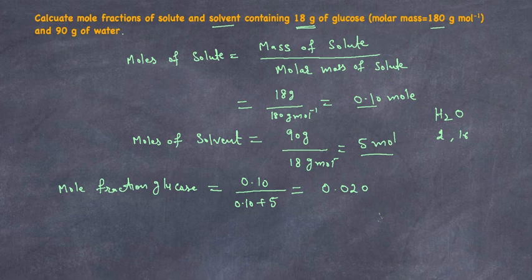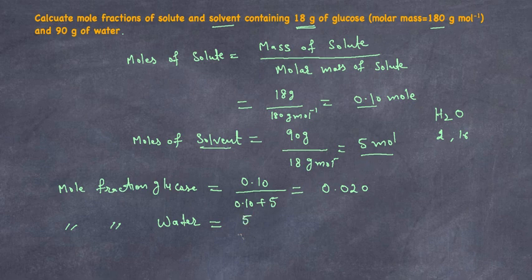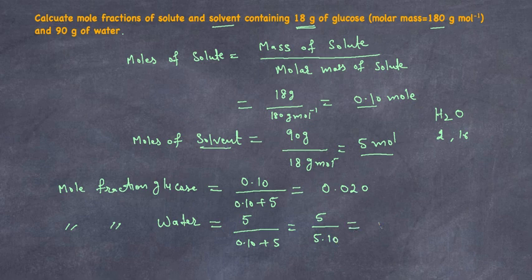Similarly, we can calculate the mole fraction of water, which is our solvent. It equals the number of moles of water, which is 5, divided by the total number of moles of all components, 0.10 plus 5, which is 5.10. This gives approximately 0.980.